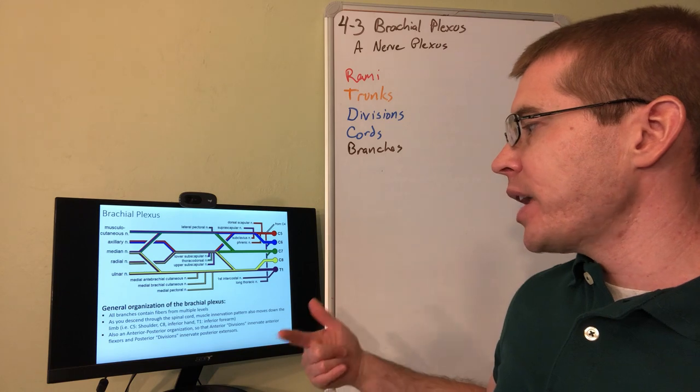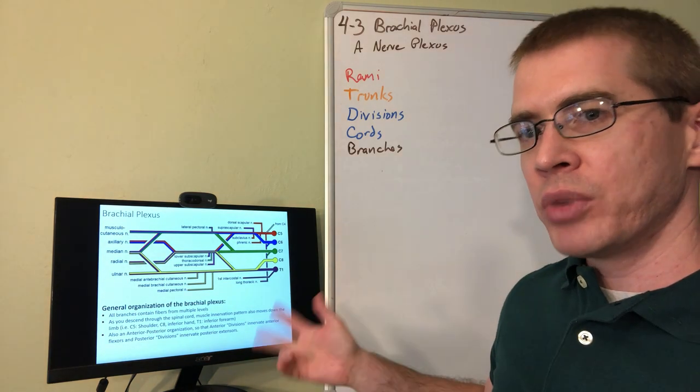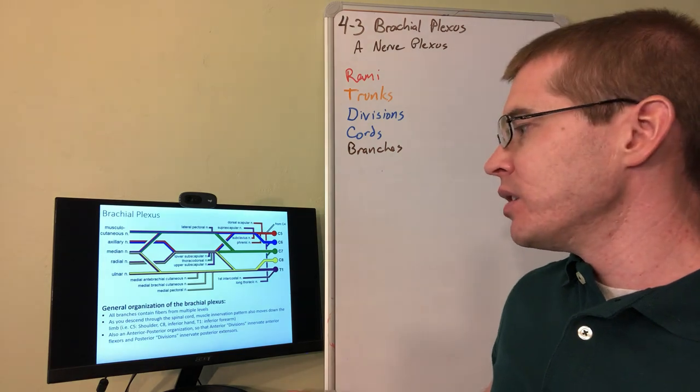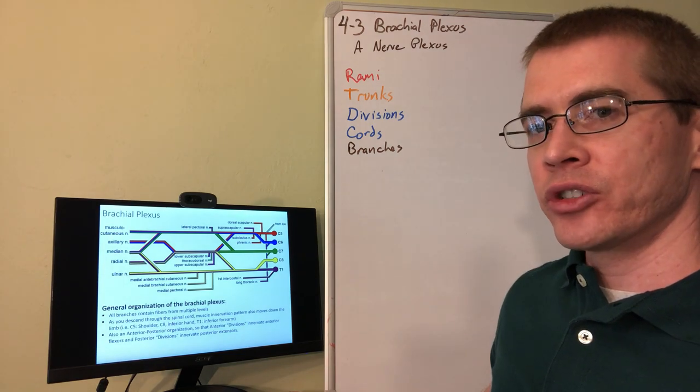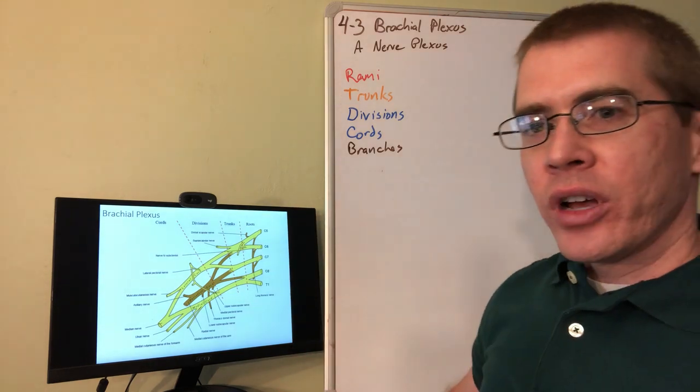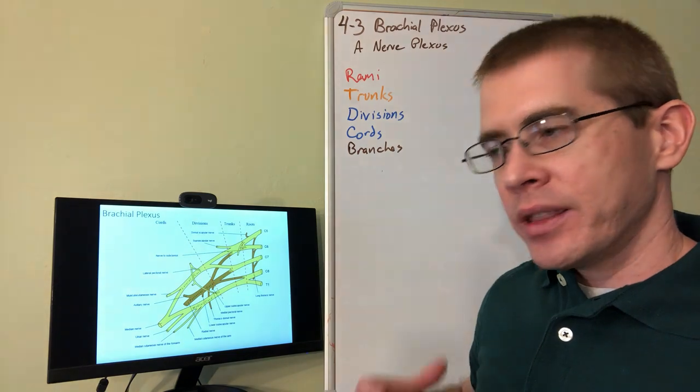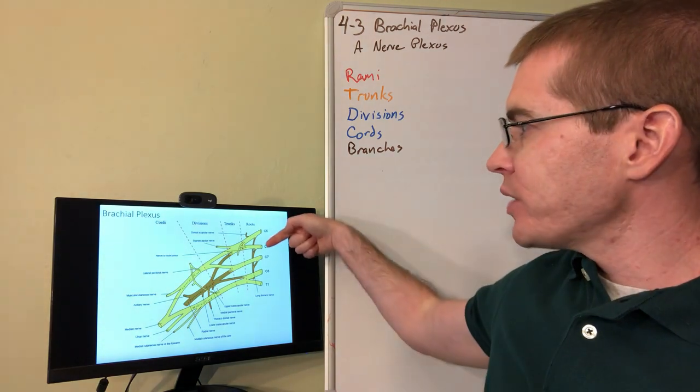And then also the rule of thumb that anterior divisions innervate flexor structures. Posterior divisions innervate posterior structures, the extensor structures. Here's a different way to look at that same brachial plexus. So whichever works for you, get that 3D sense of the brachial plexus.